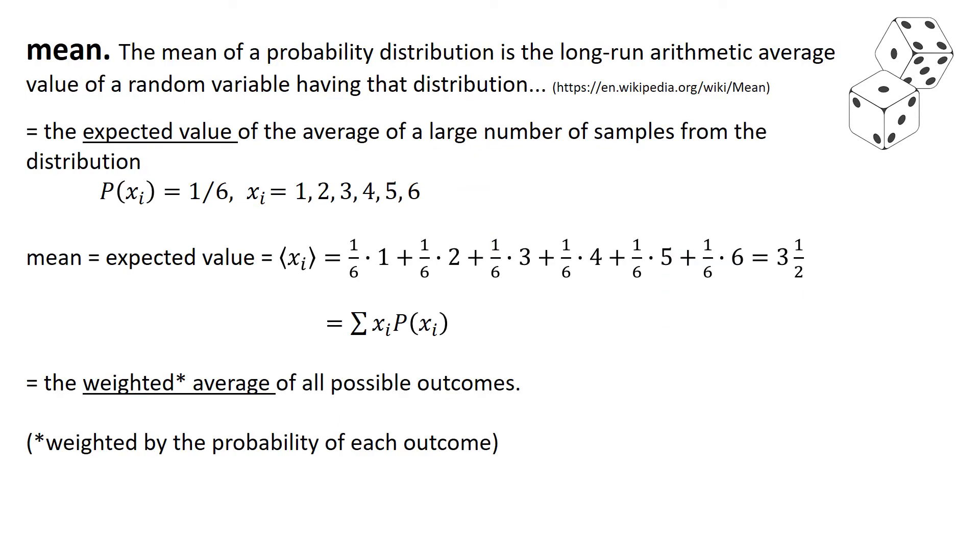Next concept, the mean. The mean of a probability distribution is the long-run arithmetic average value of a random variable having that distribution. I get that from Wikipedia. Sort of clear, I guess. Another way to think about it, the mean is the expected value of the average of a large number of samples from the distribution. In other words, if I rolled the die a bazillion times, or if I were to roll a bazillion dice, then the average result would be the mean of the probability distribution. So another key concept, if we know the probability distribution, we can compute the mean.